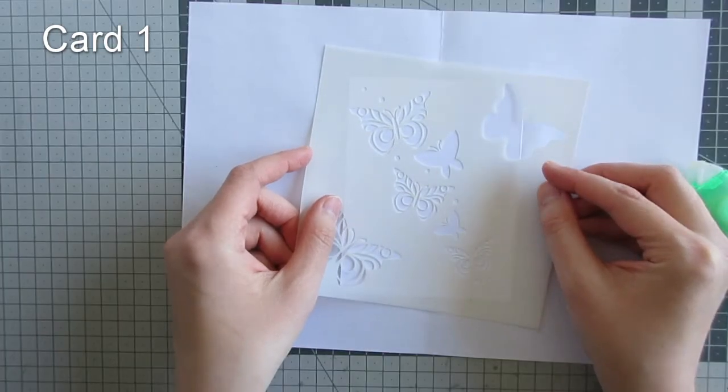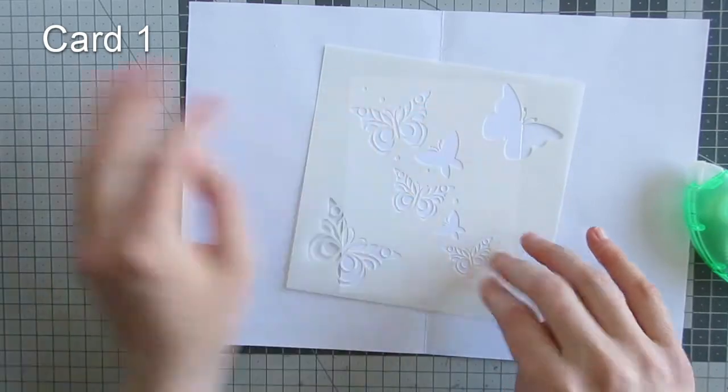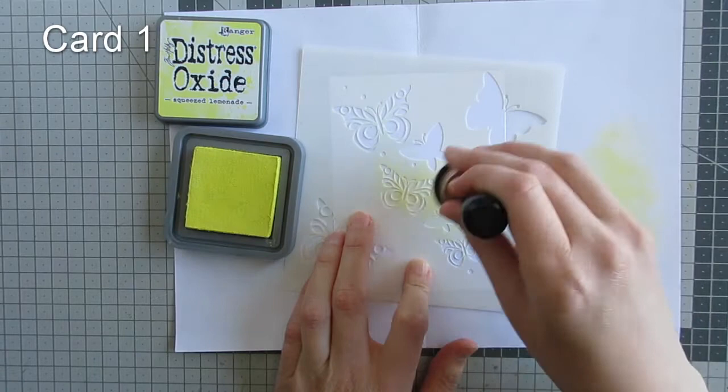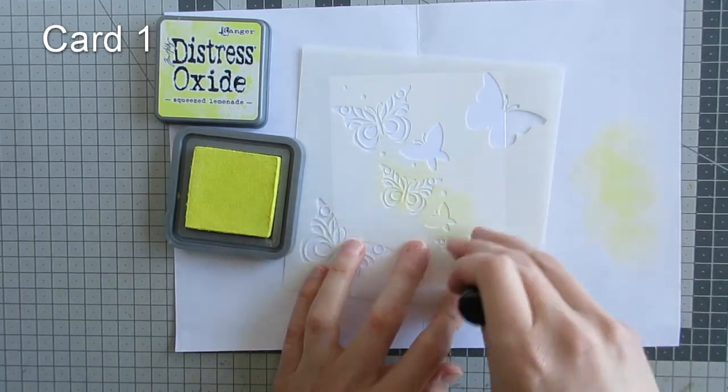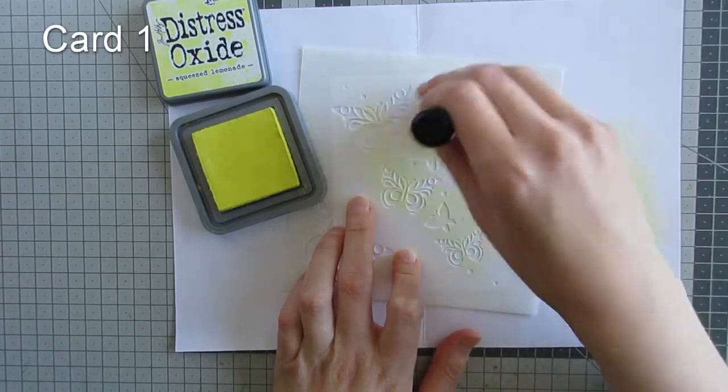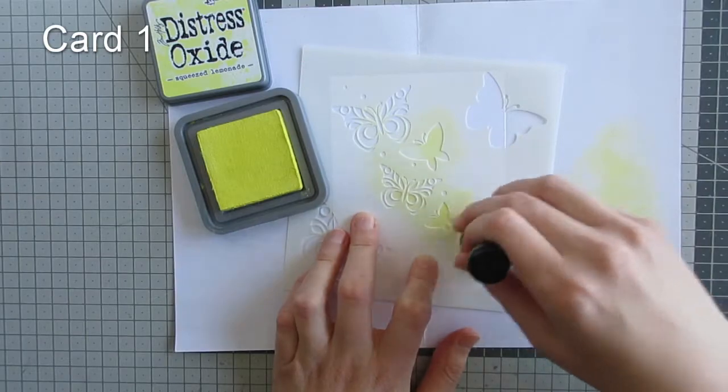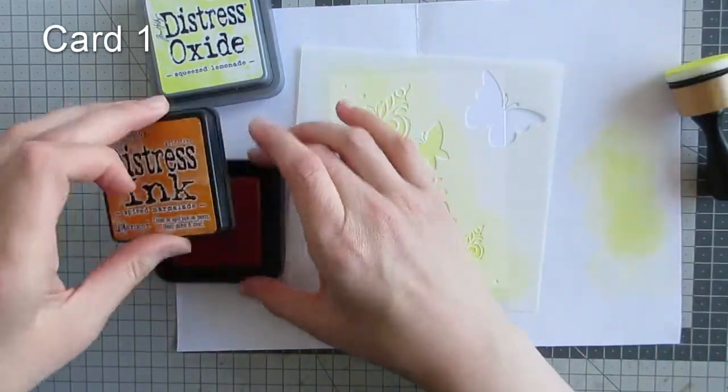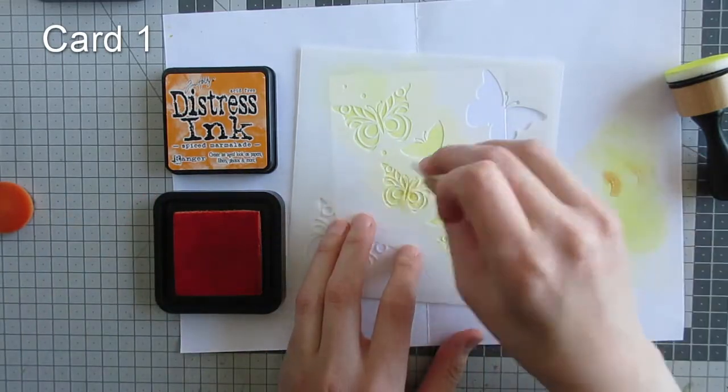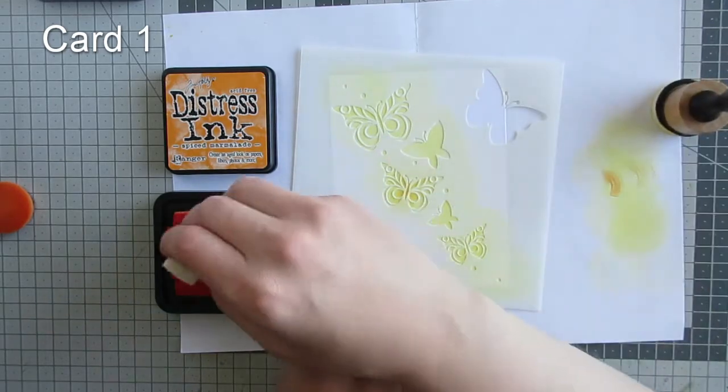For my first card, I'm using the stencil. This is the Butterflies 6x6 stencil, exclusive to Simon Says Stamp. I am ink blending Squeezed Lemonade, which came in the card kit, through the stencil directly onto my white panel. Then I added Spiced Marmalade into the centers of the butterflies to give them depth and dimension.